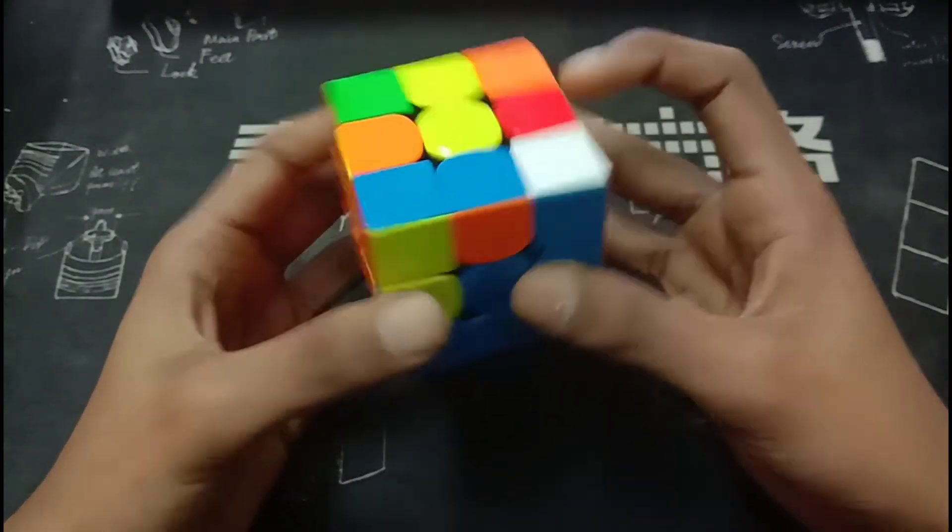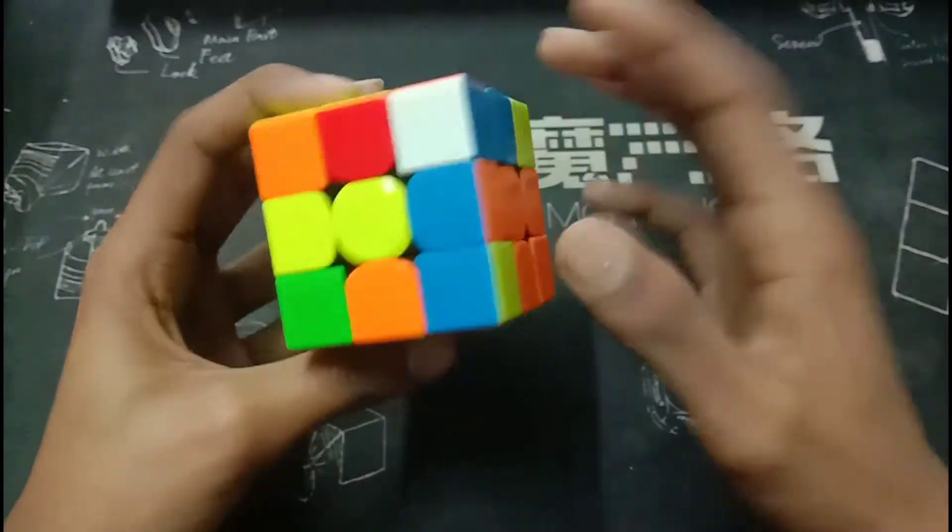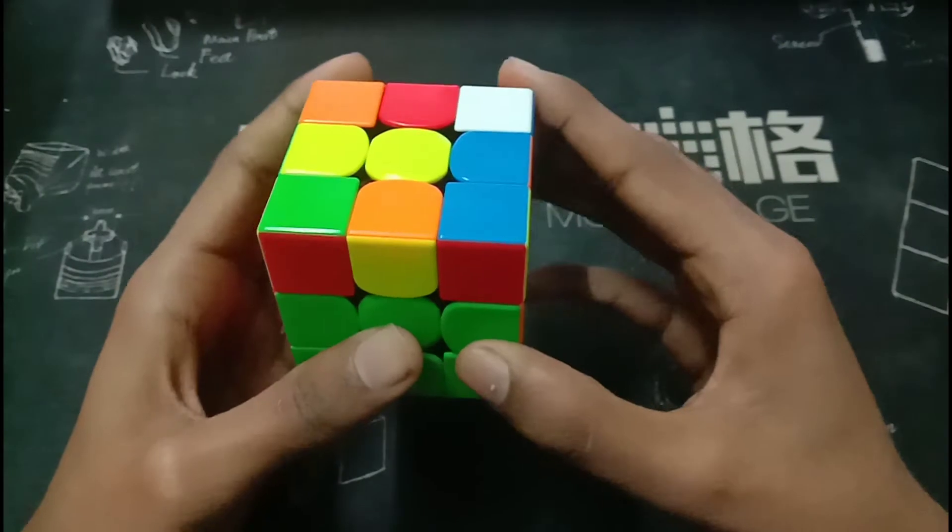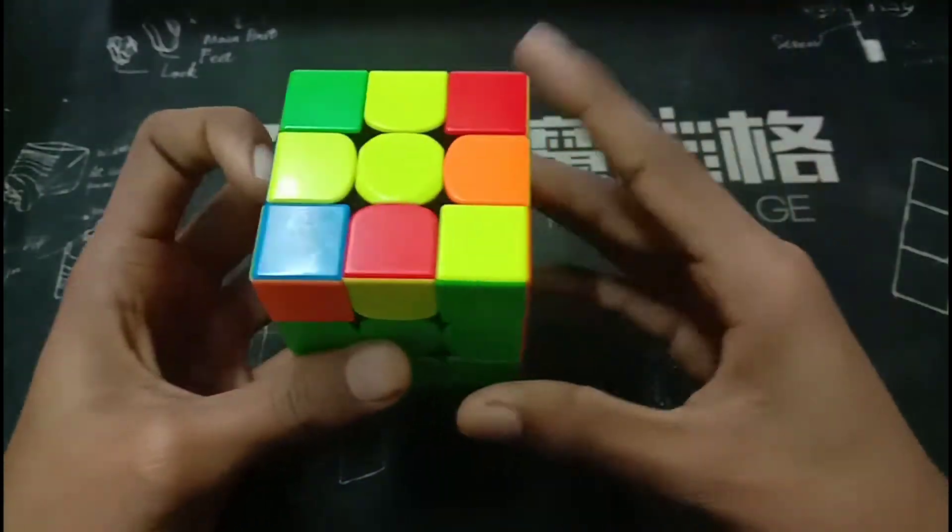For the fourth pair, he does a U, rotates, does a wide D prime so that the empty slot is at the back where this pair has to go. Separates them like this, inserts the pair into the back.